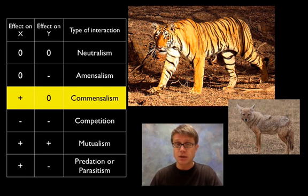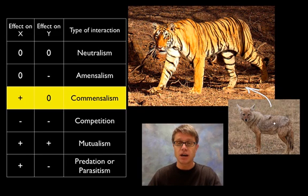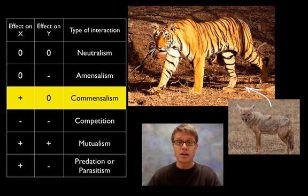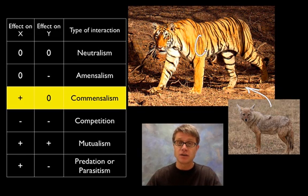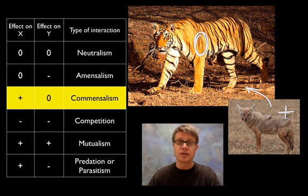Next is commensalism, where one organism is positively influenced. The golden jackal — when males or individuals get driven out — will follow tigers around at a safe distance, waiting for the tiger to kill something so they can get scraps. The jackal doesn't affect the tiger, so that's a neutral reaction, but the jackal gets a positive benefit just by living around the tiger. We call this a commensalistic relationship: the tiger gets nothing, but the jackal gains something good from it.